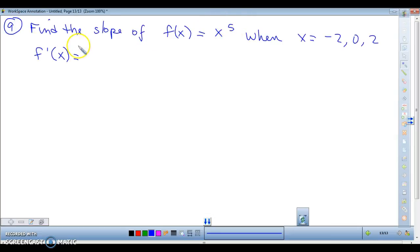Just bring that 5 down in front and decrease that power by 1. There's your derivative. So to figure out what your slopes are, all you have to do is plug in those x values for each one of them and you'll have it. It's really that easy. It's a lot easier than the limit process to do that.